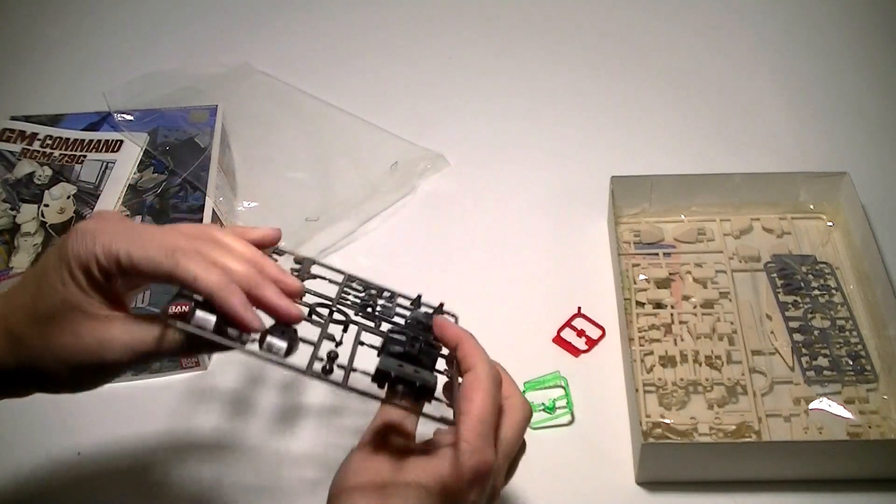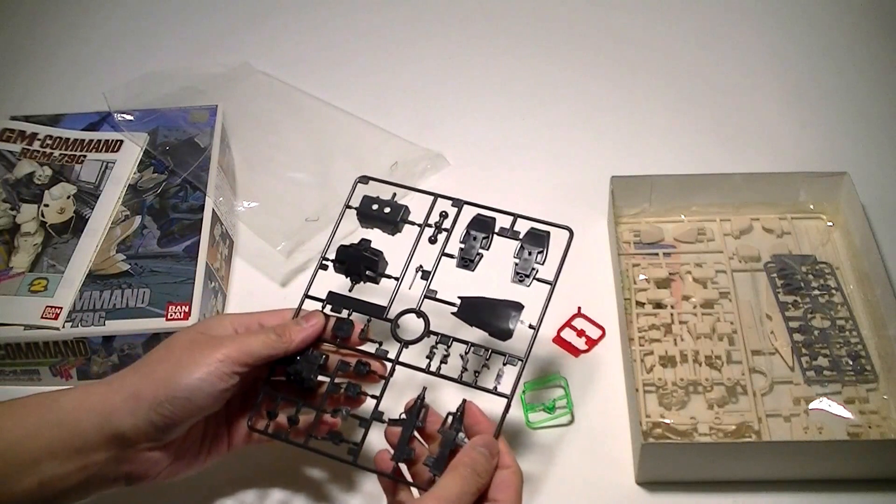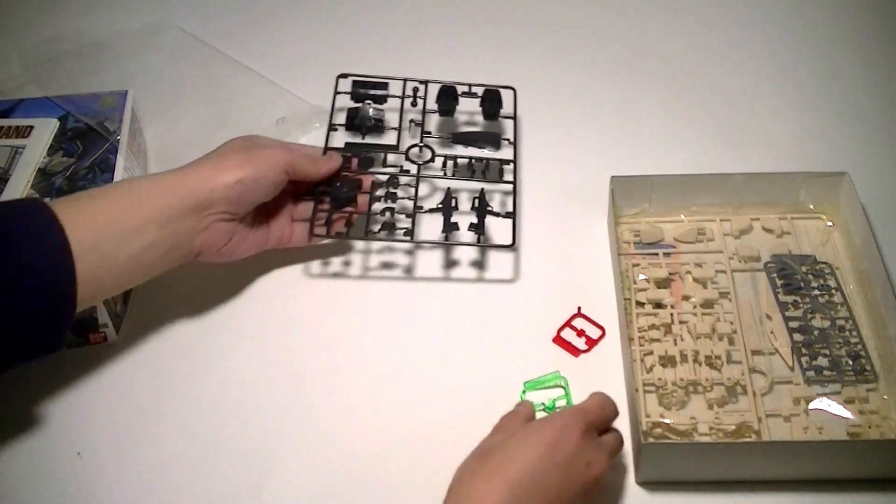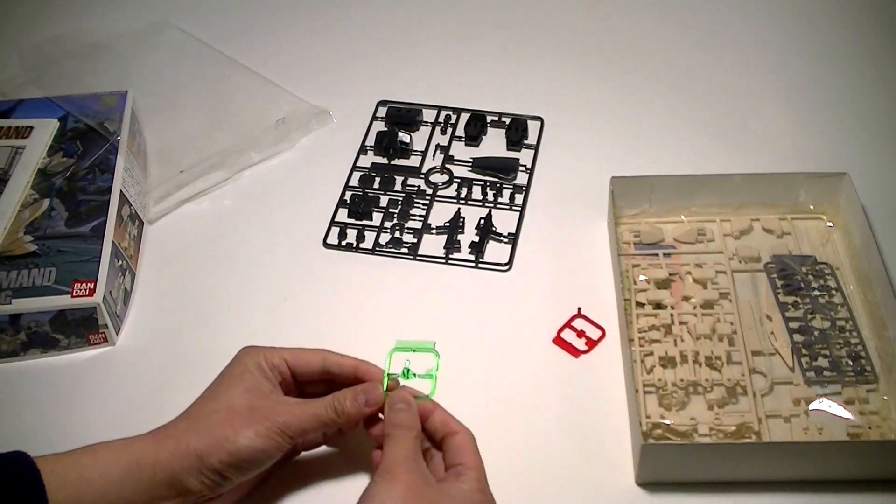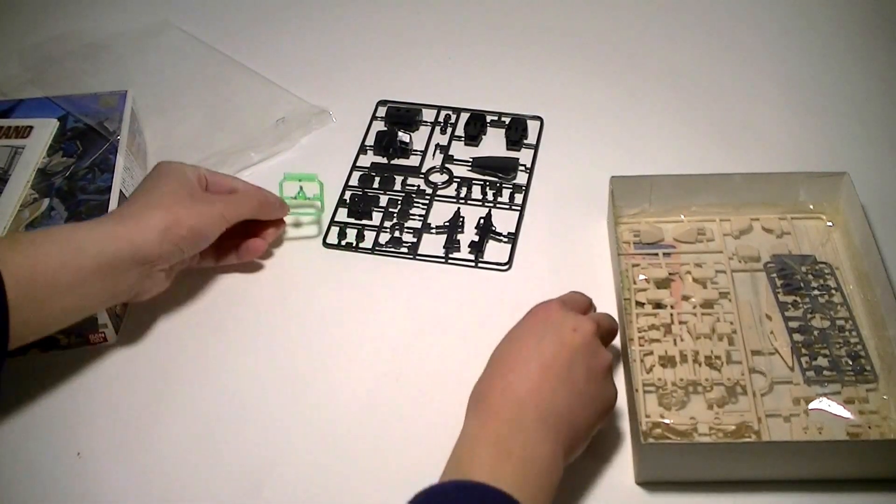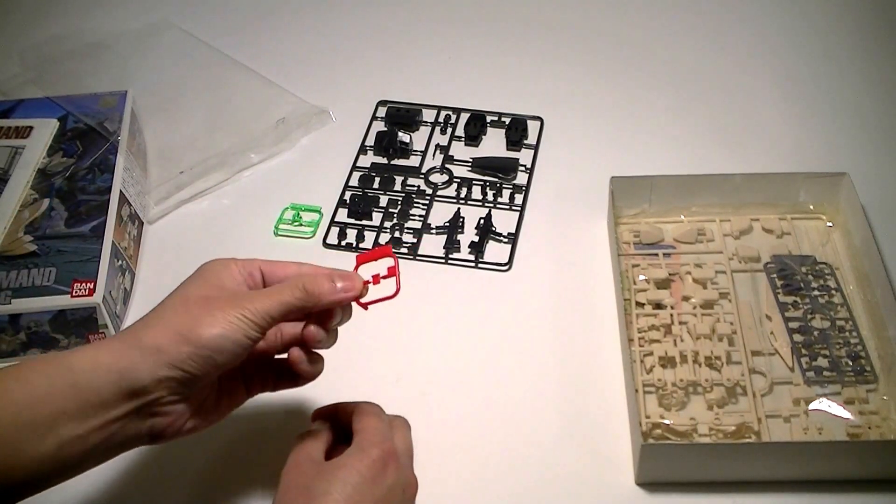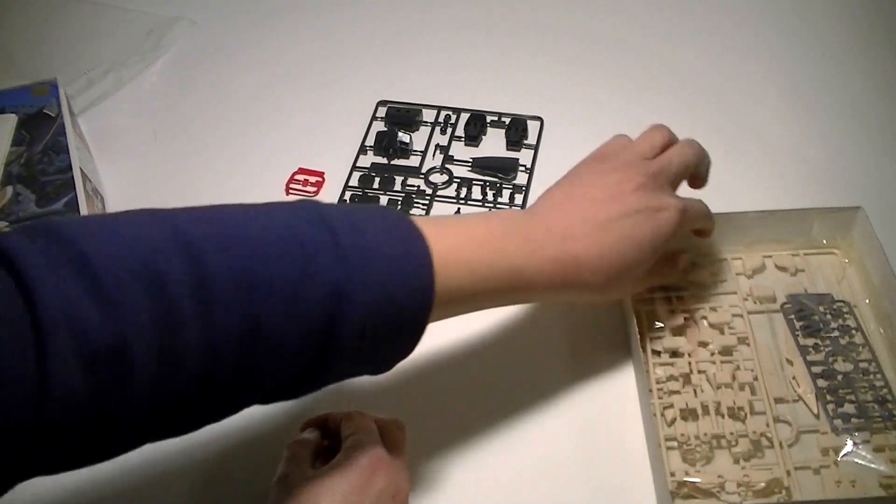Not sure why Bandai decided to separate it, maybe it saved them some plastic. Antenna and hip joints right there. We've got the clear visor, it's pretty nice. And the cockpit, the only red piece of plastic in this whole kit. Let's go ahead and move on to the next one.